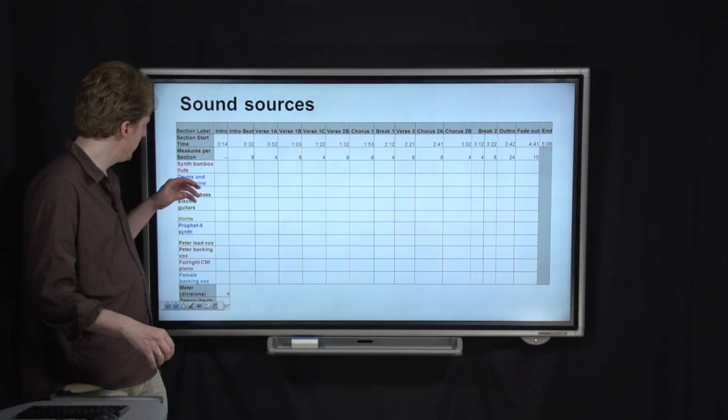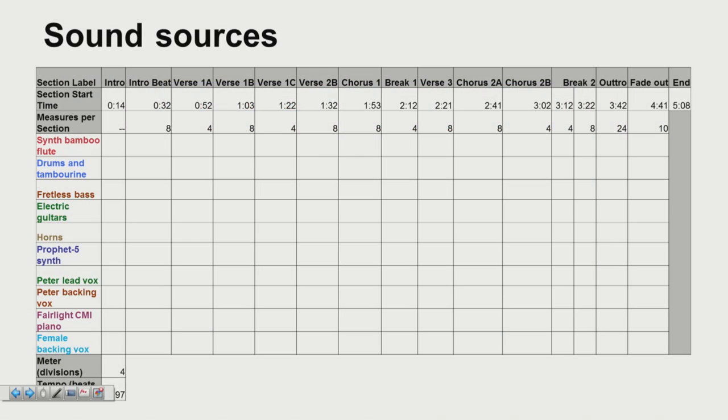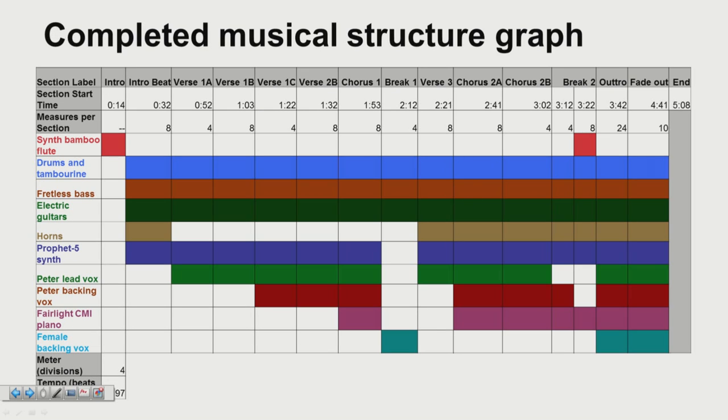Okay, so the next thing that we've done is to go through and list all the sound sources. We've identified this synth bamboo flute, drums and tambourine, bass, electric guitar, horns, a couple of different synthesizers, lead and backing vocals. And then it's a matter of going through the song and identifying in which section do these different sounds appear. So there's this very short little intro with just the bamboo flute and then pretty much all the instruments enter and the rhythm section, the bass and drums and guitars just carry all the way across the song. But you can learn a couple of interesting things just from looking at the structure graph. For example, you can see in this breakdown, even if we didn't label it a breakdown, just by looking at how many sounds exit during this little section, you can tell, okay, this is a breakpoint in the song.